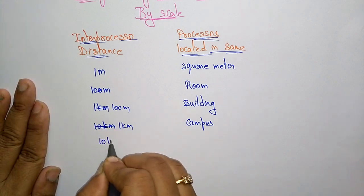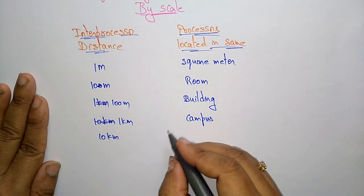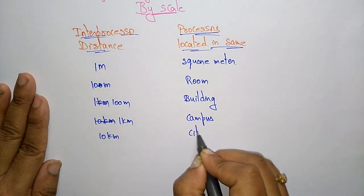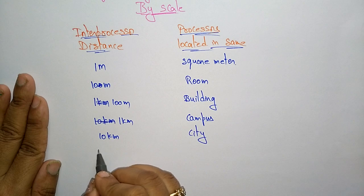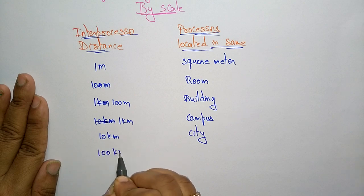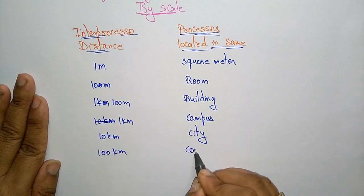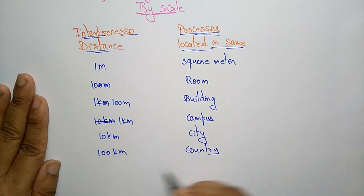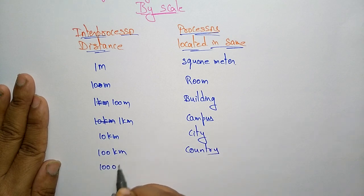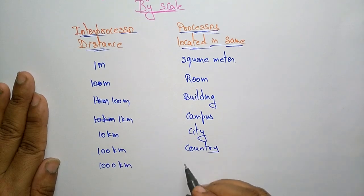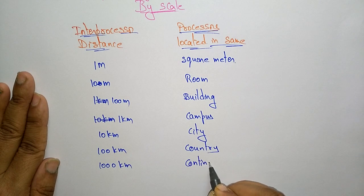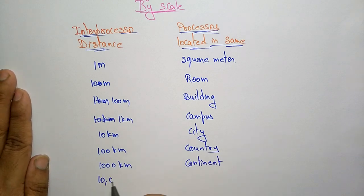If the inter-processor distance is 10 kilometers, it should be in the city. 100 kilometers means country. If the inter-processor distance is 1000 kilometers, then the processor is located in the same continent.